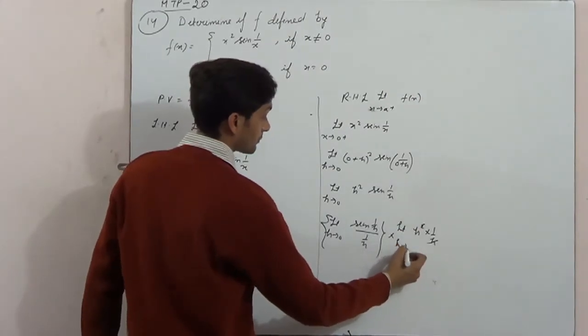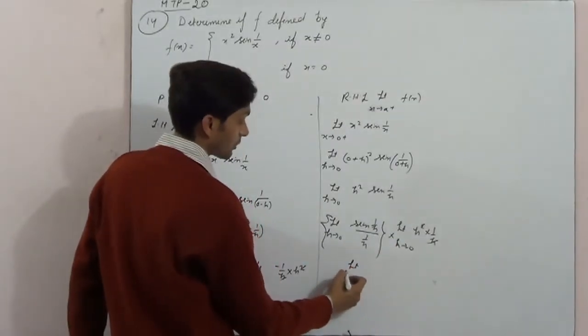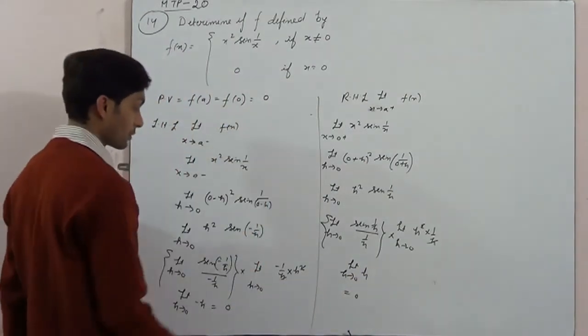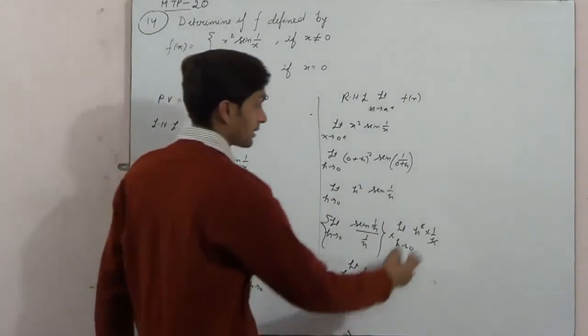Limit sin 1 by h, limit h tends to 0, it's 0. Point value is 0, left hand limit is 0, right hand limit is 0.